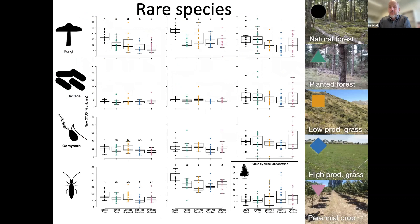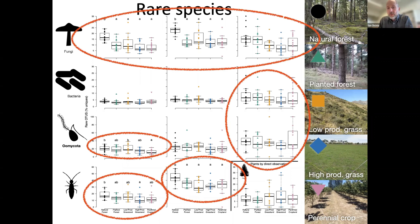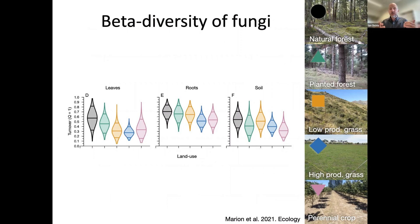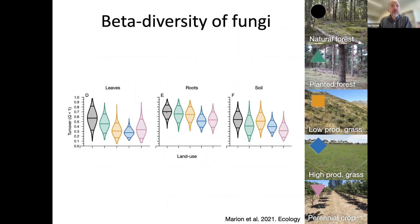In our data, where there was no consistent pattern in species richness or diversity, when we look at rare species there is a consistent pattern: across almost all different groups, rare species are most frequent in the natural forest — the unmodified ecosystems — and then decline with increasing land use intensification. This ties into a change in the co-occurrence network: we're losing these specialist interactions, very similar to what we're seeing in the pathogen community with the loss of host specialists. We also see that beta diversity within management units declines with land use change.